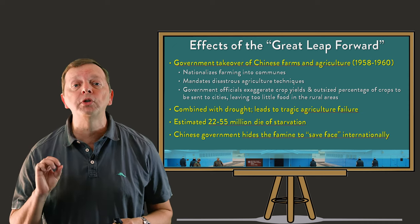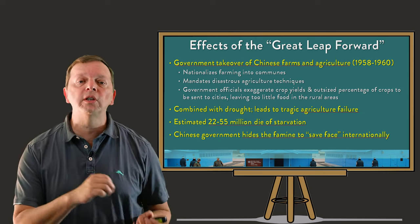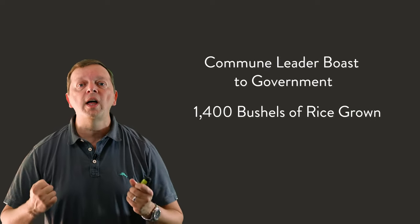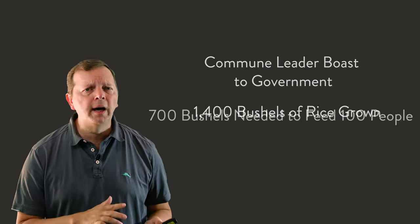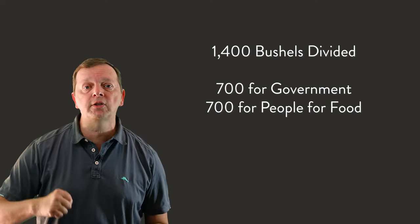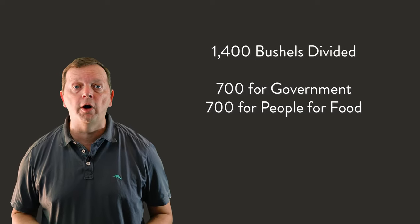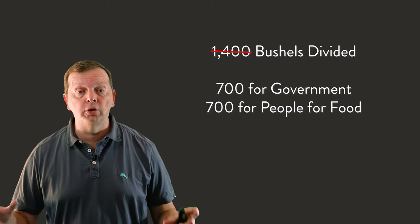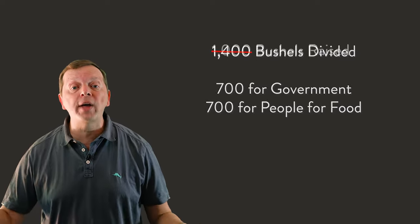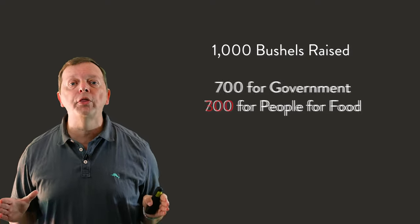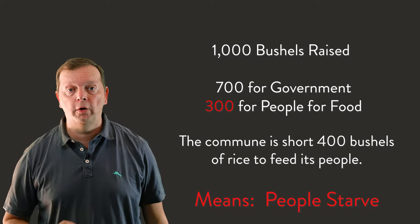The government would take a percentage of this inflated yield to use in the cities. For example, if your commune leader tells the government that your commune of 100 people raised 1,400 bushels of rice — and to feed 100 people for a year takes about 700 bushels — the government would take 700, leaving 700 bushels. However, if your commune actually only raised 1,000 bushels, the government still takes 700, leaving your commune with only 300 bushels — half what is required for those 100 people to survive.